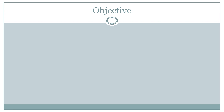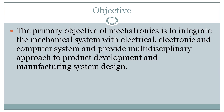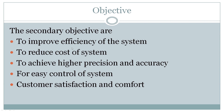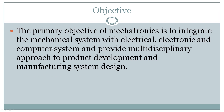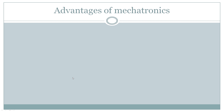Now let's move to the objectives of a mechatronics system. The primary objective is to integrate the mechanical system with electrical, electronic, and computer systems, and to provide a multidisciplinary approach to product development, manufacturing systems, and design. Secondary objectives include: improving the efficiency of the system, reducing cost, achieving higher precision and accuracy, enabling easy control of the system, and improving customer satisfaction and comfort.